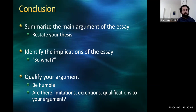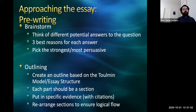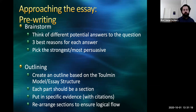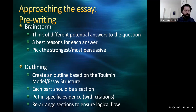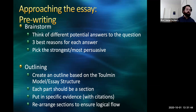When approaching the essay, the most important thing you can do is take time before you start writing to really think about and plan your essay. In your pre-writing, think of different potential answers to the prompt and identify different reasons for each answer. Once you've established that list, pick the strongest and most persuasive — and from the answers you've rejected, you have your counter-arguments ready to go. Then build an outline based on the Toulmin model essay structure, where each part of the model becomes a section. Put in specific evidence with citations in your outline and rearrange sections to ensure a logical flow.